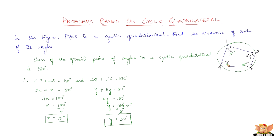We found angle Q which is 30 degrees, and angle S is 5 times y, so 5 times 30 is 150 degrees. We've found the measure of each of the angles of the given cyclic quadrilateral. We just had to use one property: the sum of the opposite pairs of angles in a cyclic quadrilateral is 180 degrees.